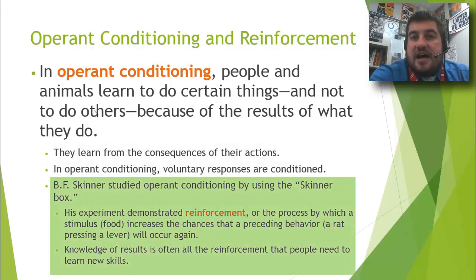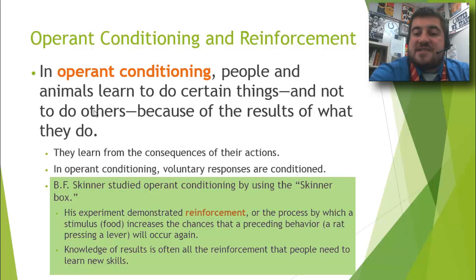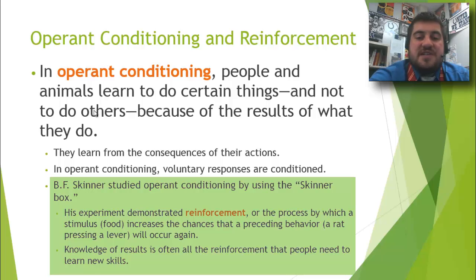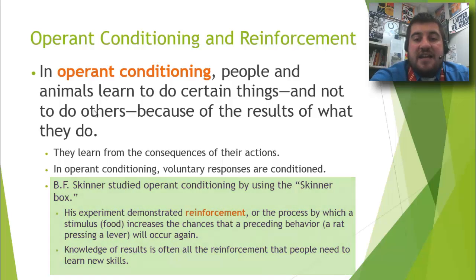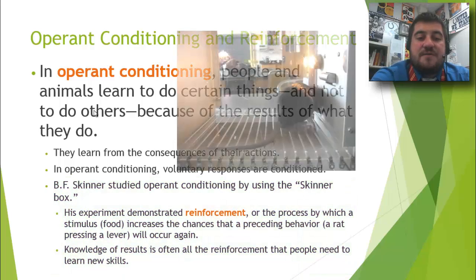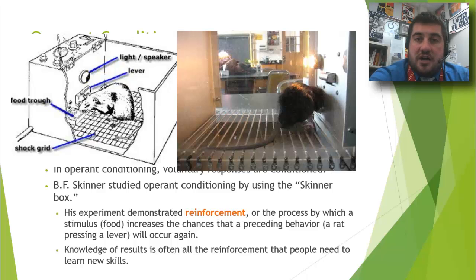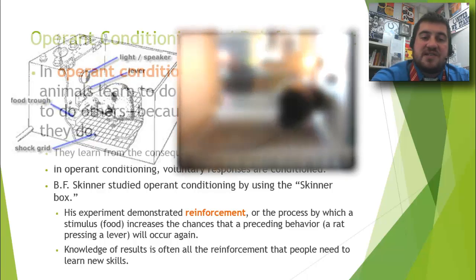B.F. Skinner was the operant conditioning guy. John Watson did classical conditioning. B.F. Skinner does operant conditioning by using something called the Skinner Box, and his experiments demonstrate reinforcement. Reinforcement is the process by which a stimulus increases the chances that a behavior will occur again. He did this with rats and food — if the rat presses the bar, it gets a pellet, increasing the chance it will press the bar again.